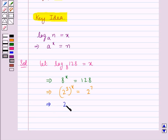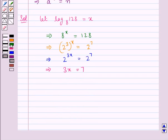This means 2 to the power 3x is equal to 2 to the power 7, which means that 3x is equal to 7, and so we get x equal to 7 upon 3.